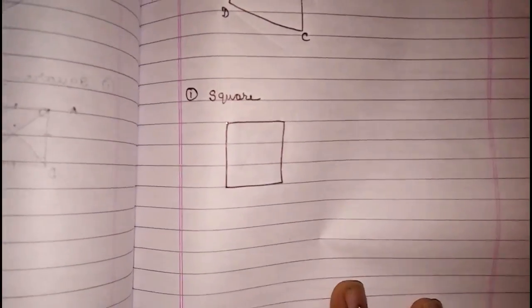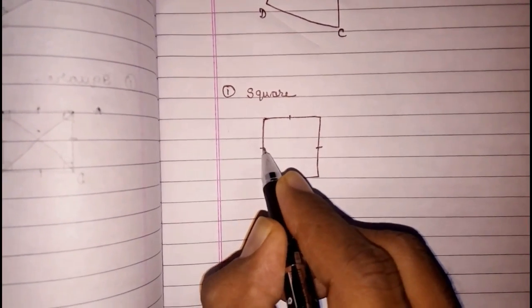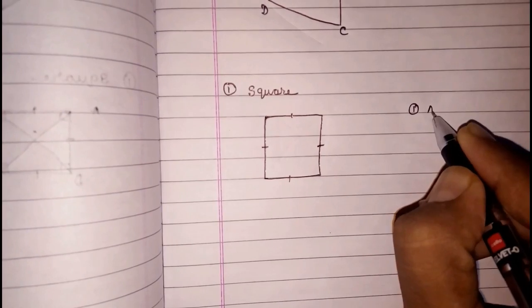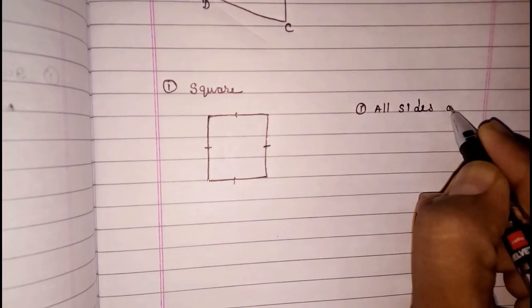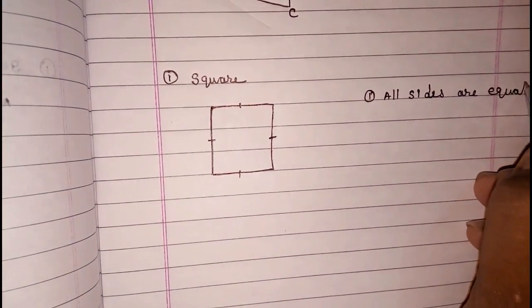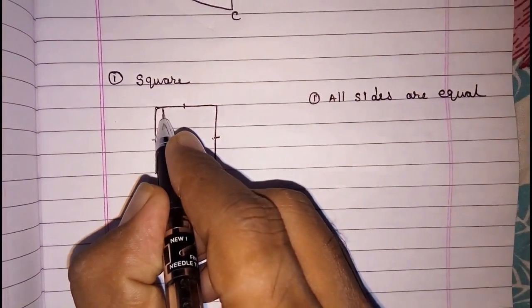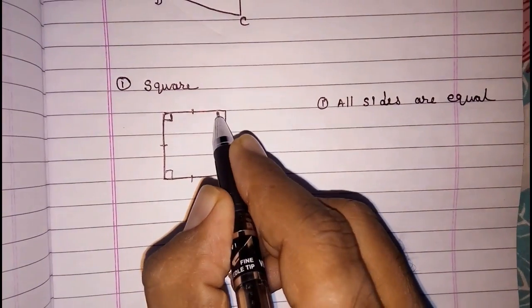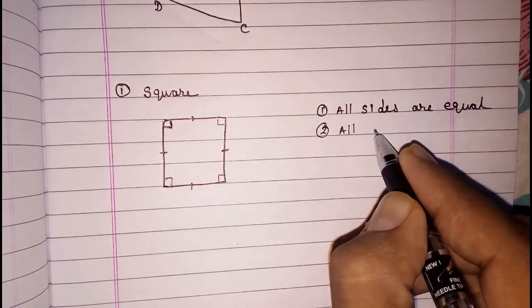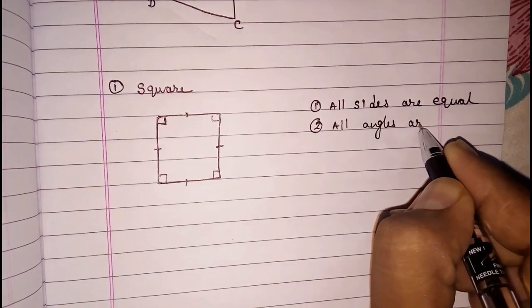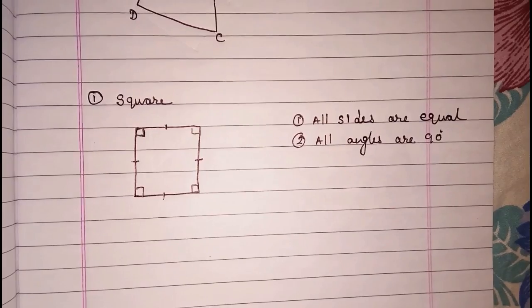This is a square. In a square, all sides are equal. The second thing in a square is that all angles are 90 degrees. All angles are 90 degrees, or you can say all angles are equal at 90 degrees.